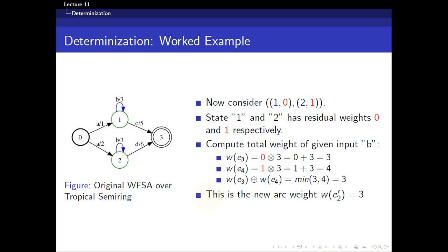Now we are at states 1 and 2. We consider all transitions with the same input — in this case, input 'b'. I call these transitions e3 and e4. The weight of state 1 is 0, so 0 times 3 gives 3. The weight of state 2 is 1, so 1 times 3 gives 4. Then 3 plus 4 over the tropical semi-ring gives 3, so the new arc weight is 3.